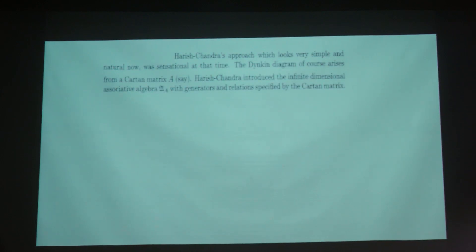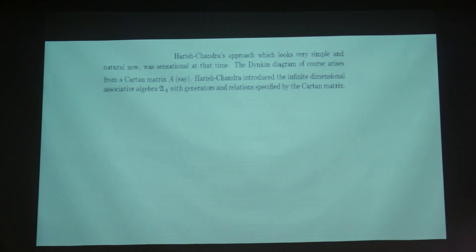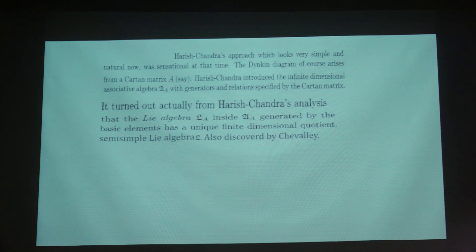The Dynkin diagram arises from a Cartan matrix A. Harish Chandra introduced the infinite-dimensional associative algebra U_A with generators and relations specified by the Cartan matrix. It turned out from Alexandra's analysis that the Lie algebra L_A inside U_A is generated by the basic elements as a unique finite-dimensional Lie algebra L — that was also noted by Chevalley.